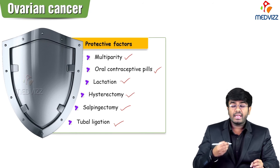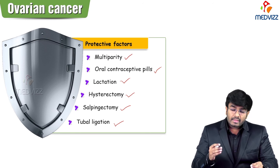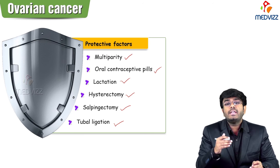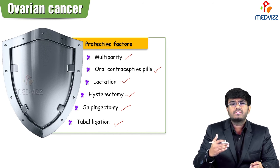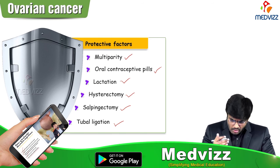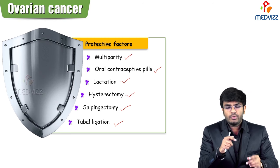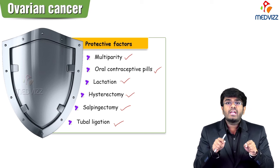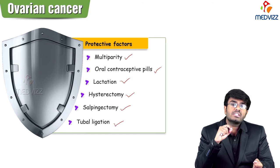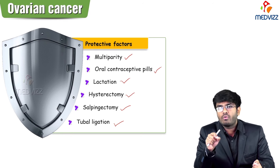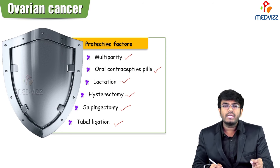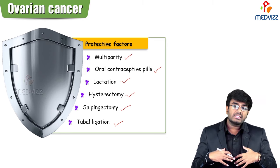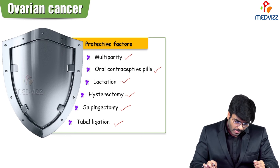Certain surgeries — hysterectomy, salpingectomy, and tubal ligation — are protective because they knock out the pathway for carcinogens. Carcinogens like asbestos from perineal talc can travel via vulva, vagina, cervix, uterus, and fallopian tubes to reach the ovaries. Removing the uterus or tubes eliminates that route. Physical exercise is also a protective factor, since obesity is a risk factor — exercise is the opposite.